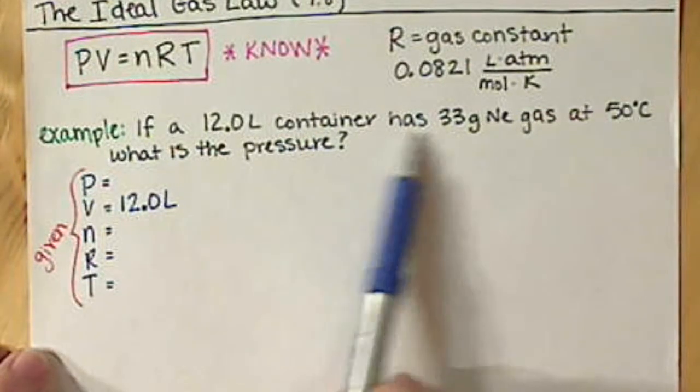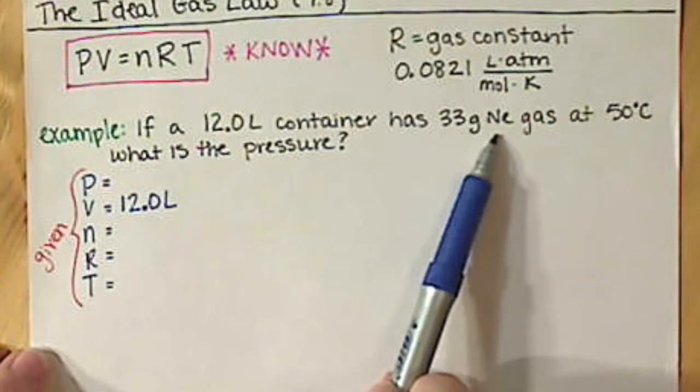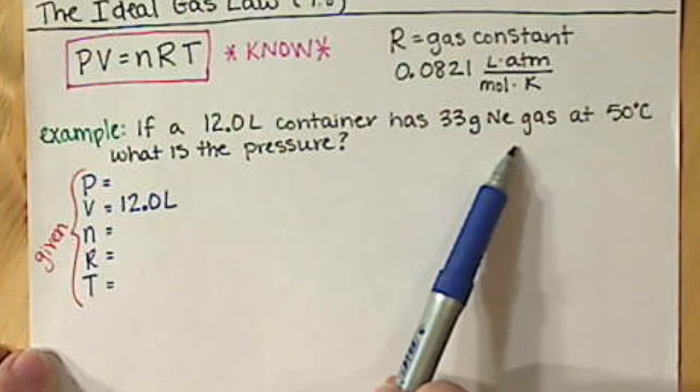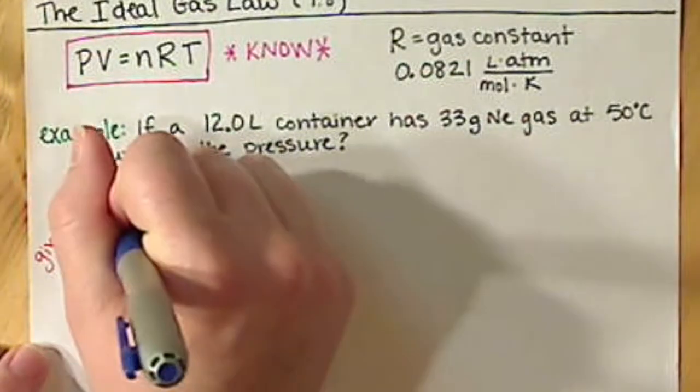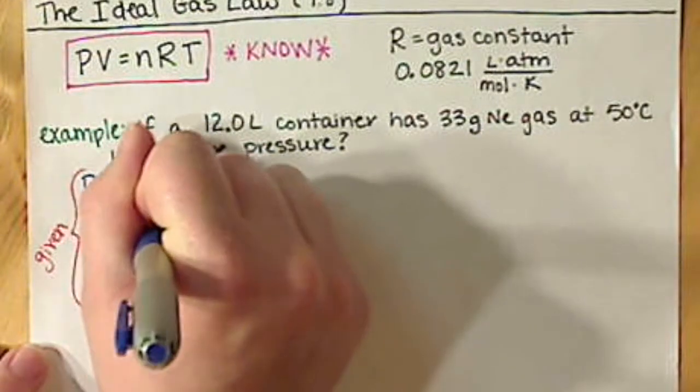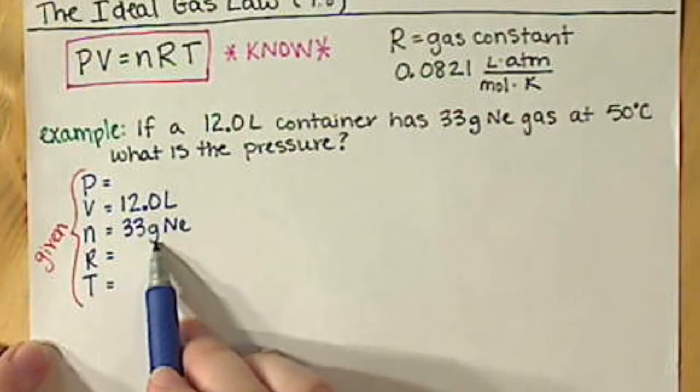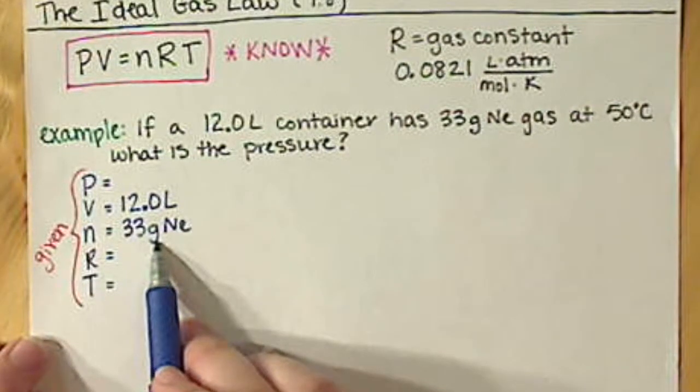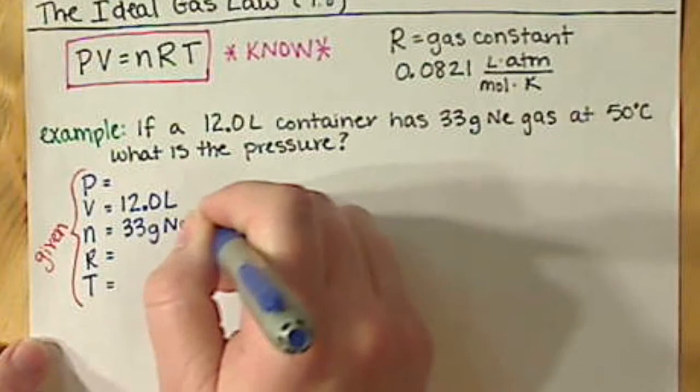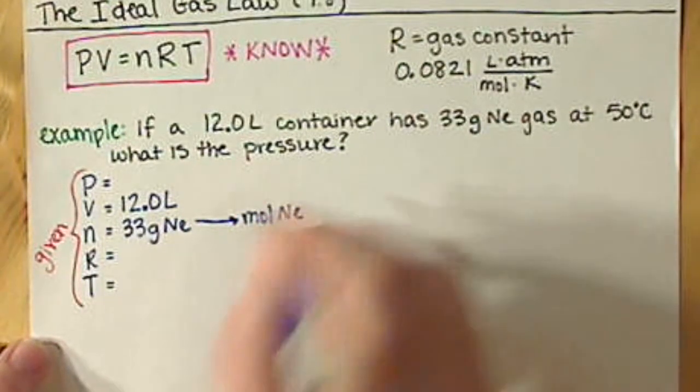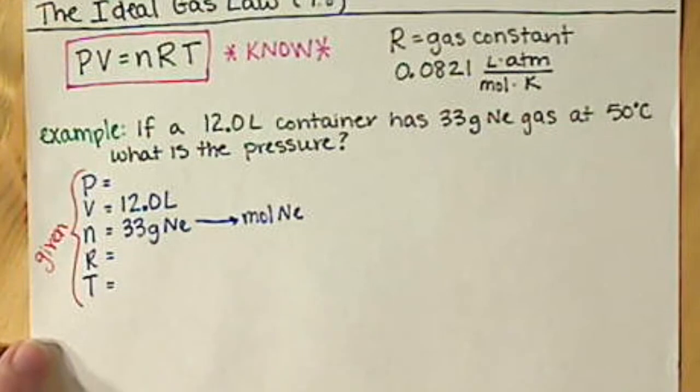Then we have 33 grams of neon gas, so that's our amount of gas that we have, which corresponds to our N value. But remember, we want to keep our units good. We can't have grams. Grams basically does us no good in any type of calculation. We want N to be in moles. So we're going to have to convert our grams into moles.